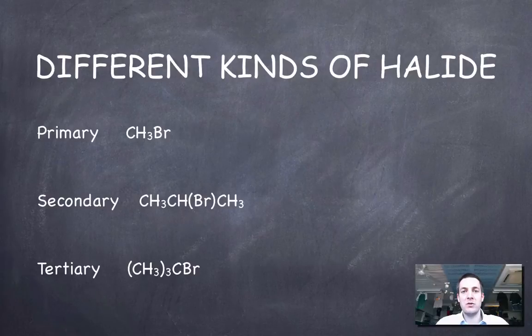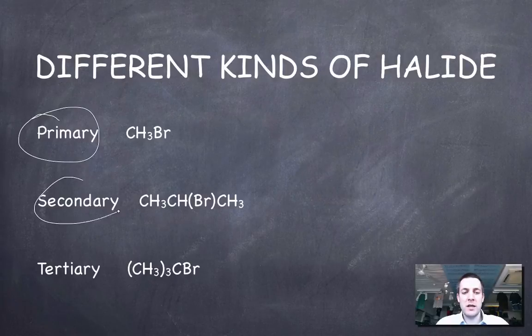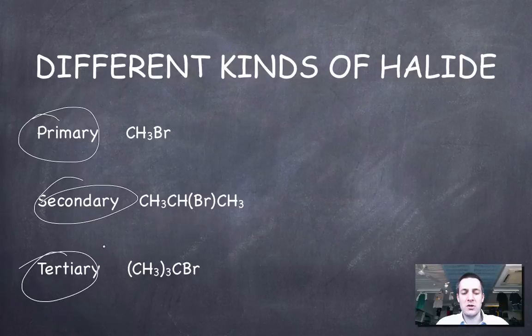So now that we've covered what their naming system involves and what atoms we've got to have in a molecule for it to be a halogenoalkane, now we can look at the different kinds.